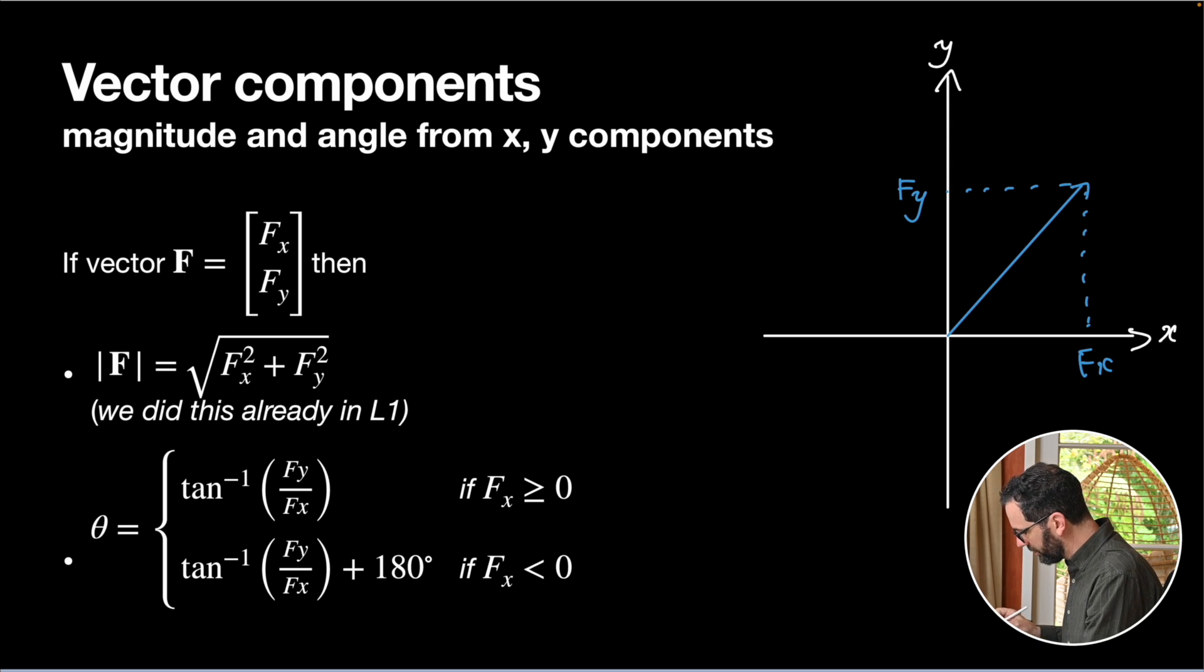Well, we know how to do the magnitude. We did this already in an earlier video where we basically took the two components, squared them, and took the square root. So the magnitude of our vector f, we can get just by using Pythagoras, which works out to be this formula, which always works. Square the two sides. Anything negative will be squared and become positive. Add those together, take the square root, that's your magnitude.